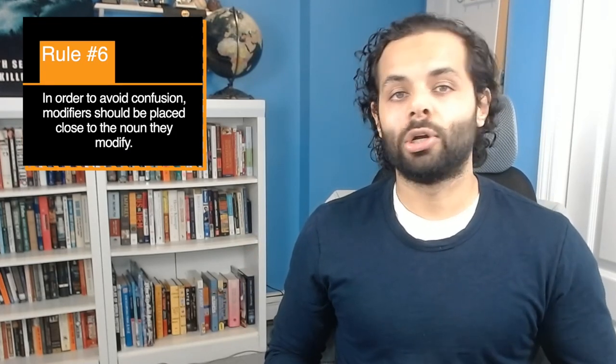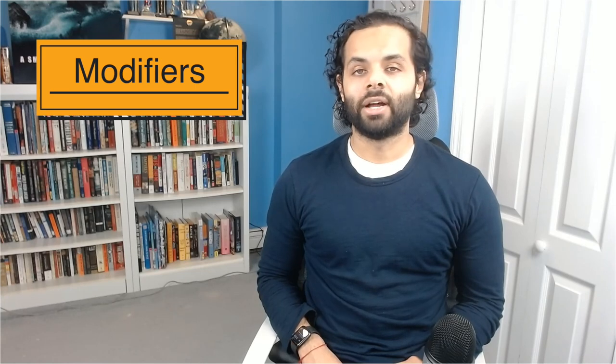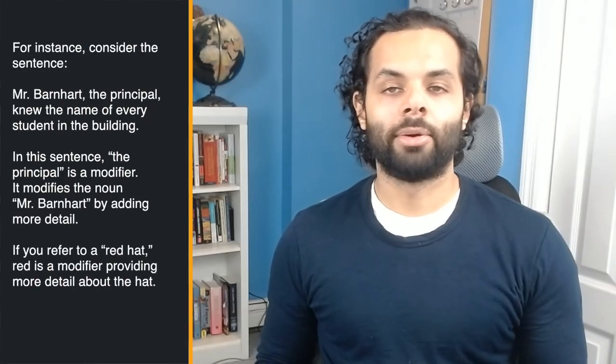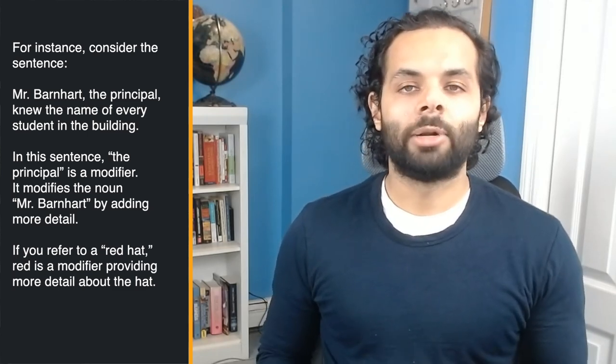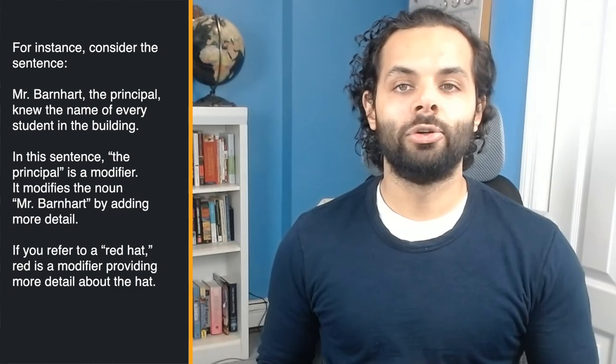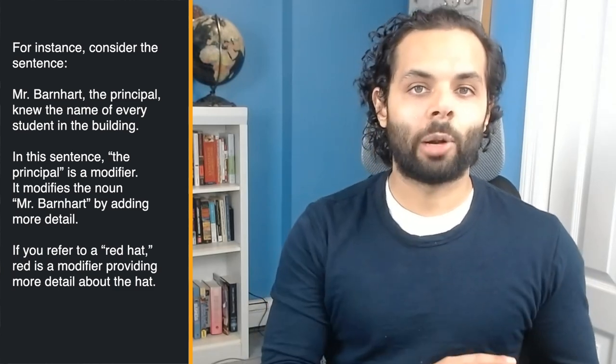Rule six: in order to avoid confusion, modifiers should be placed close to the noun they modify. Modifiers are words, phrases, or clauses that add explanation, emphasis, or detail to a sentence. They are generally placed right next to the word they're describing. For instance, in the sentence 'Mr. Barnhart, the principal, knew the name of every student in the building,' 'the principal' is a modifier adding details about Mr. Barnhart. Sometimes modifiers are misplaced — a misplaced modifier occurs when it is too far away from the noun it modifies, causing confusion.